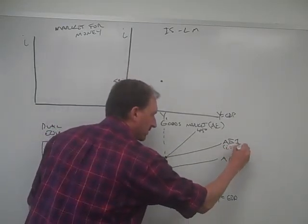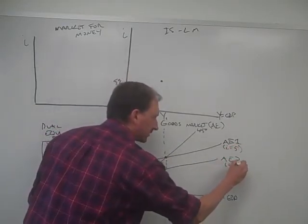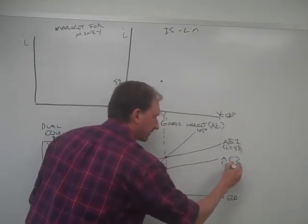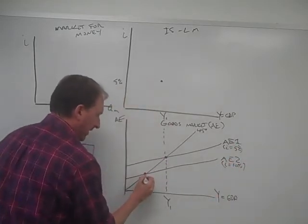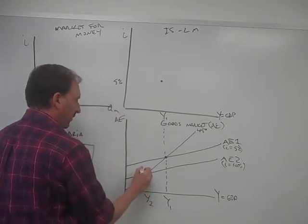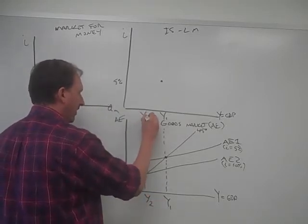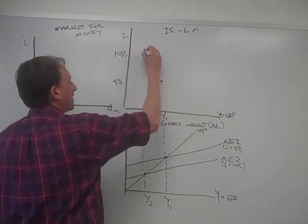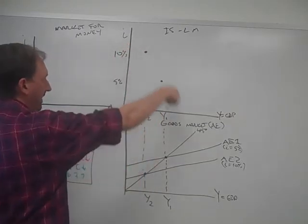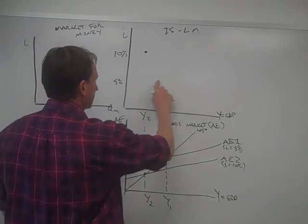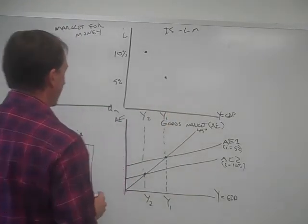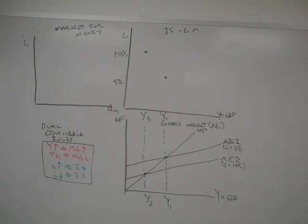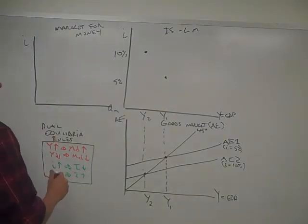And this assumes that I equals 10%. So if interest is 10%, then we'd be at Y2. And let's call that Y2, which is right there. And then 10%, so that would give us that point right there. And then you're starting to see the downward slope take shape for the IS curve. It's got a downward slope on it.